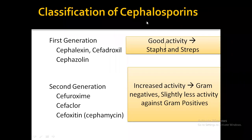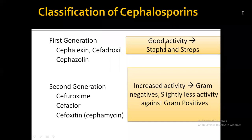The second generation drugs are cefuroxime, cefaclor, cefprozil, and cefoxitin. The second generation drugs are mainly acting on gram-negative organisms. Cefuroxime is available both orally and parenterally. Other drugs in the second generation include cefotetan and cefoxitin. The most commonly used drug is cefuroxime.